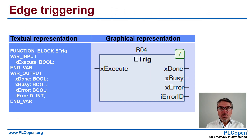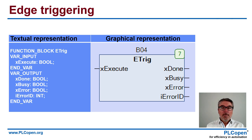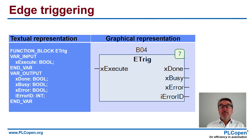Let us look at the first one: edge-triggering. Here you see on the left the textual representation and on the right the graphical representation. The rising edge executes and starts the function block, and you will see that at the busy output. When it is done with its work, the done output will be set — if there is no error, with no accompanying error indicated.